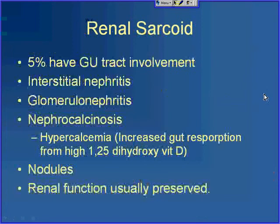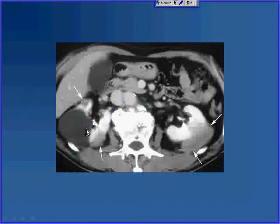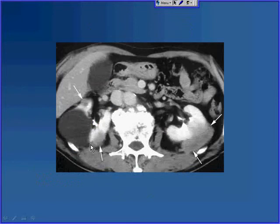A small percentage of patients have genitourinary tract involvement, typically interstitial nephritis, glomerular nephritis, or nephrocalcinosis. The nephrocalcinosis is due to upregulation of vitamin D in sarcoid, leading to increased gut reabsorption of calcium, causing medullary nephrocalcinosis. Rarely, as in the liver and spleen, patients can get renal nodules. These are usually incidental findings because renal function is almost always preserved. This example shows bilateral sarcoid nodules in the kidneys — areas that aren't enhancing as much as the surrounding enhancing renal parenchyma, alongside a simple cyst.